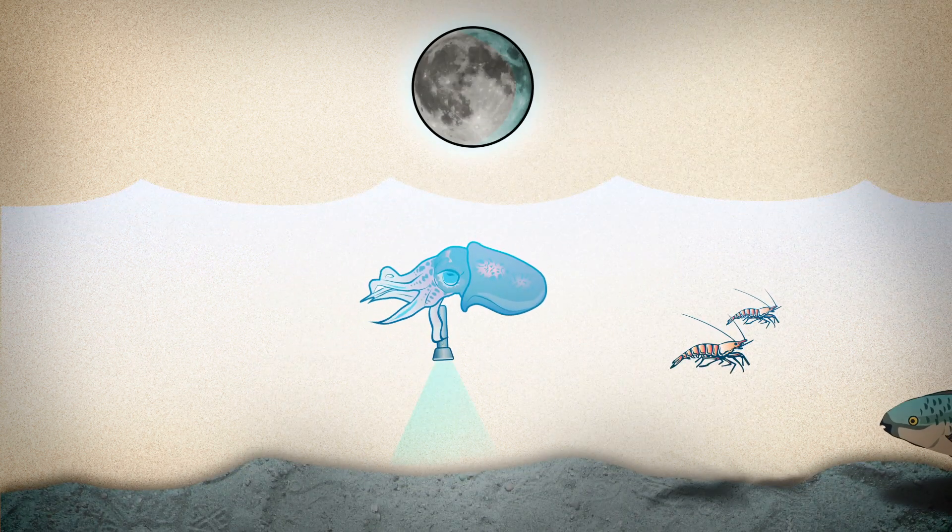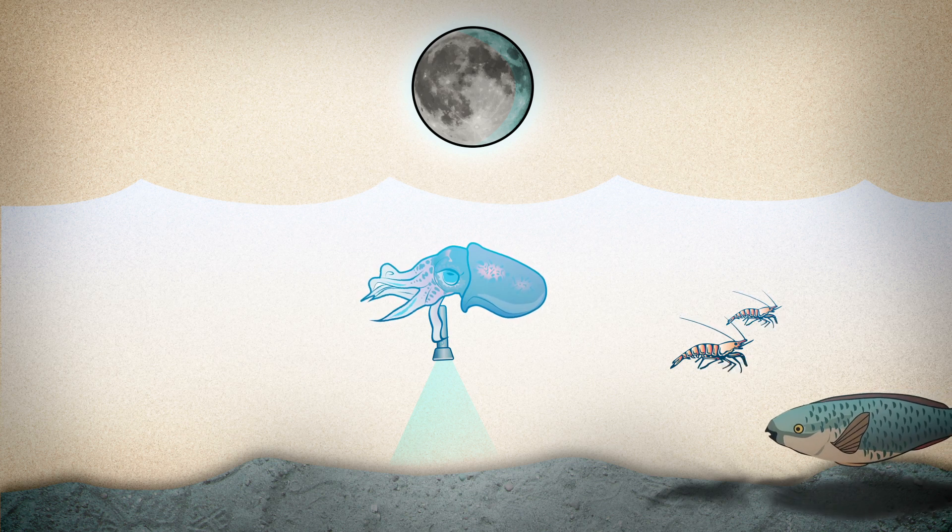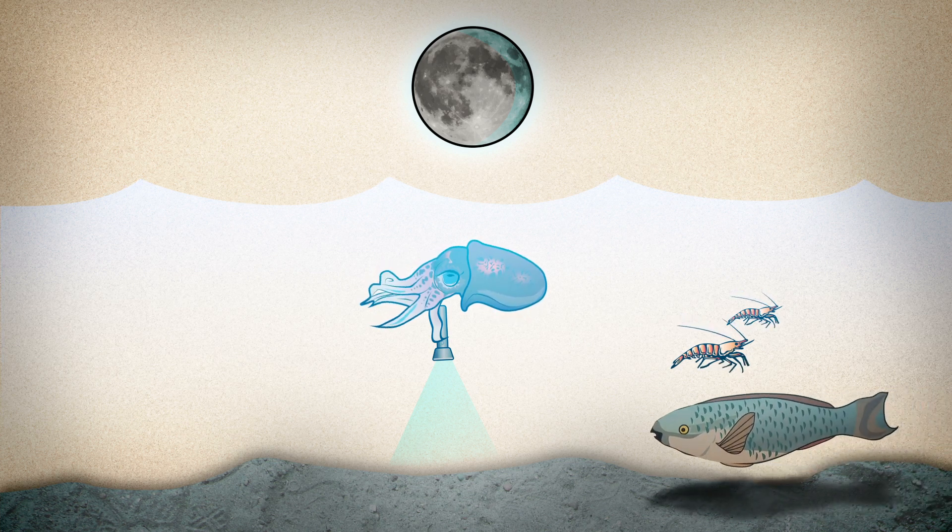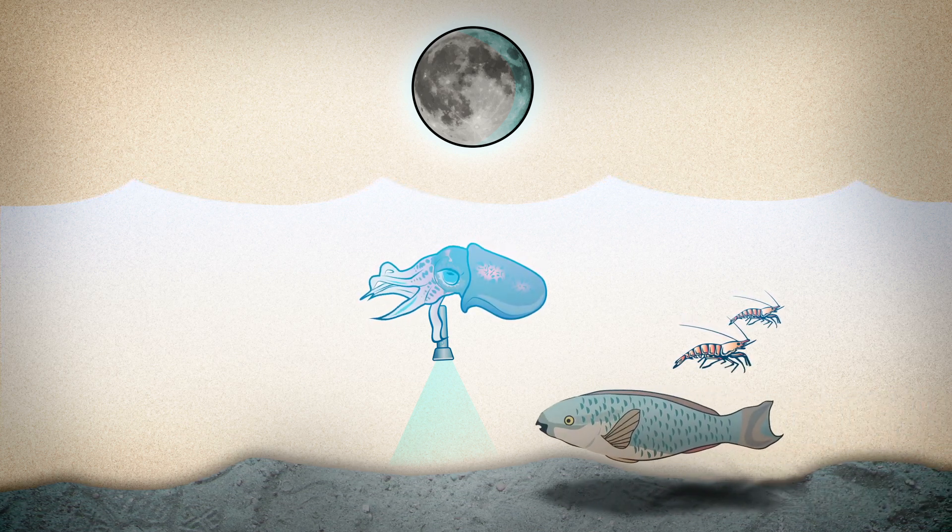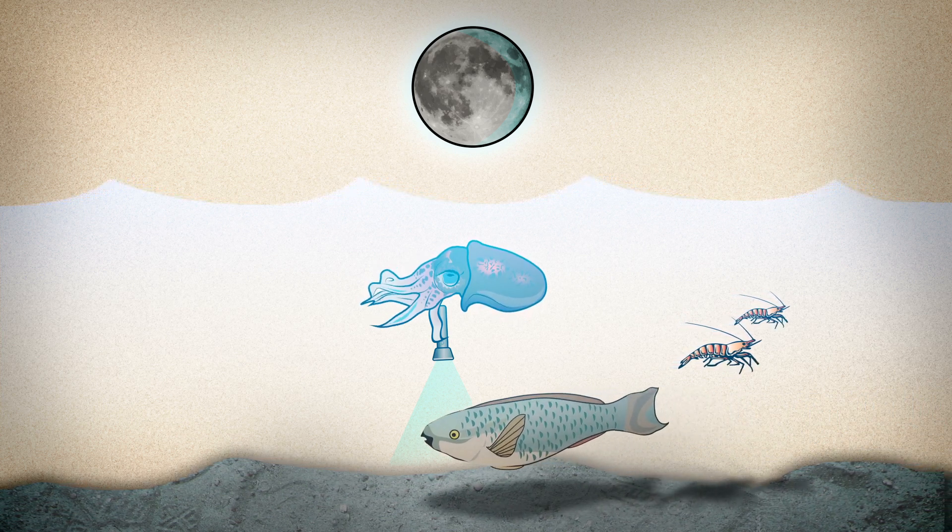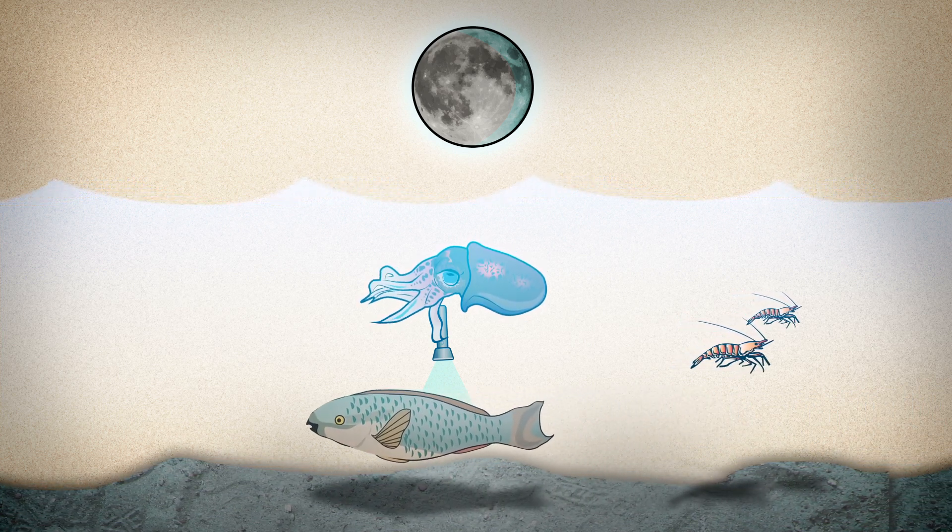In an ingenious form of camouflage known as counter-illumination, the squid uses its glowing bacteria to mimic moonlight, hiding its shadow from any creatures looking for an easy meal.